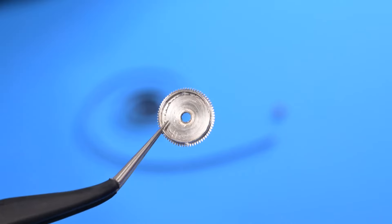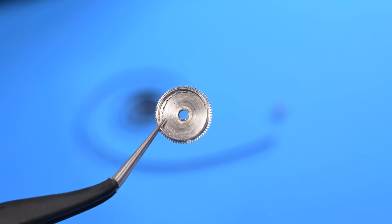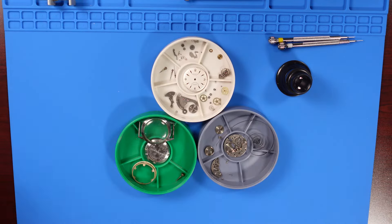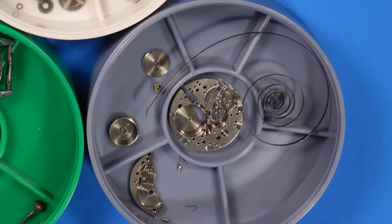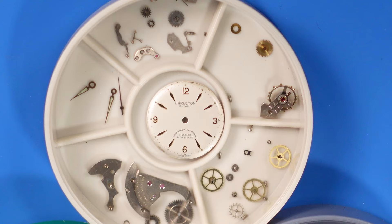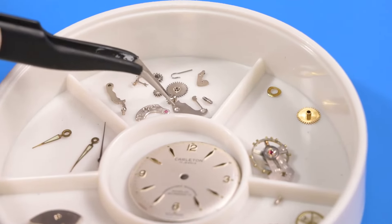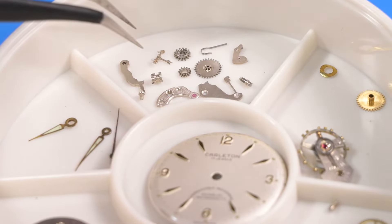We've taken this watch apart. Here's a better look at all the parts that have come out. This is that sliding pinion that rolled across the table before. And we're going to get these parts clean. Before putting the main plate in the cleaner, I'm going to reattach the balance so I can protect the delicate hairspring.